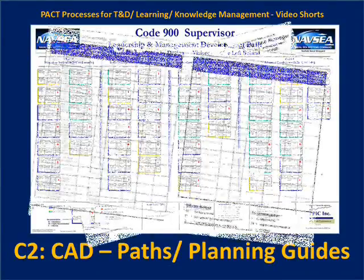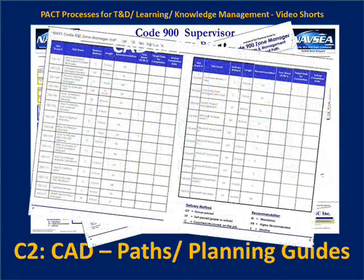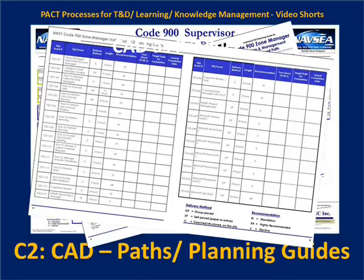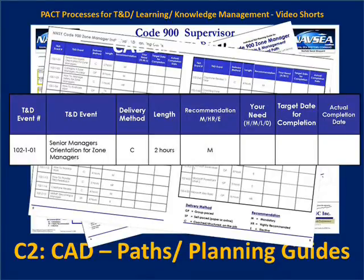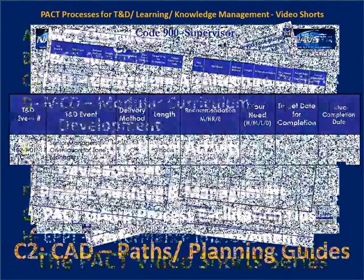Along with a training and development path is the training and development individual planning guide. This allows the learner and their management to down-select from all of the content on the path so that they can put together a plan that's appropriate for them and their needs, given their incoming knowledge and skill set and the immediate performance requirements of the job.